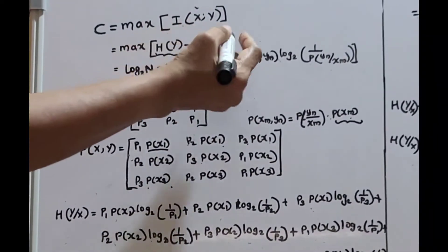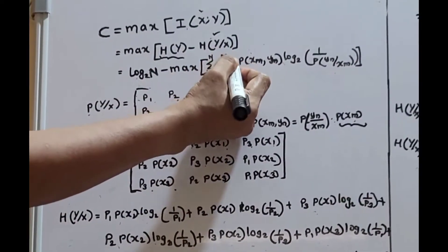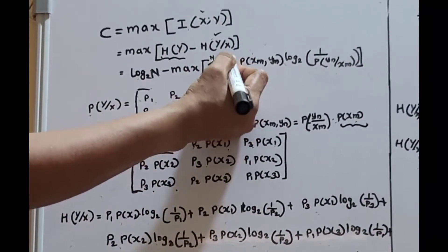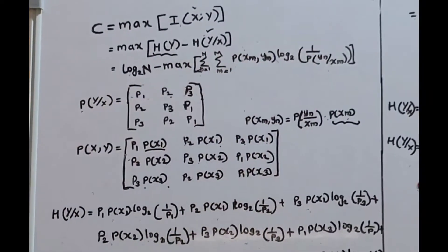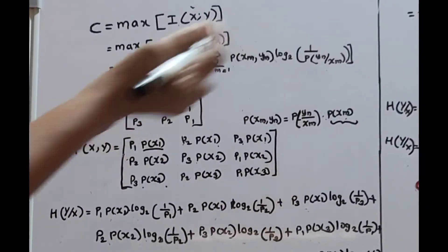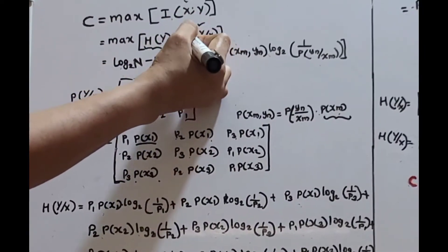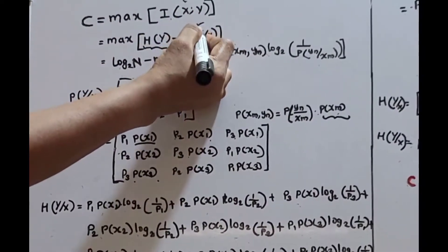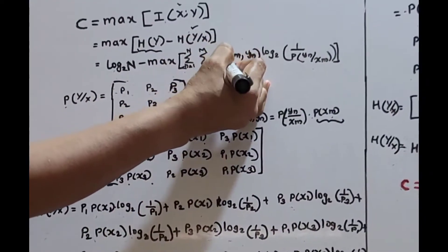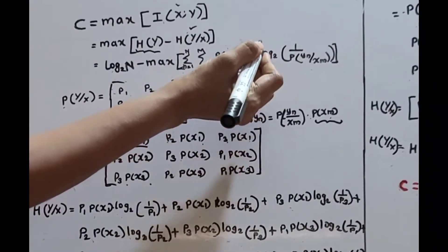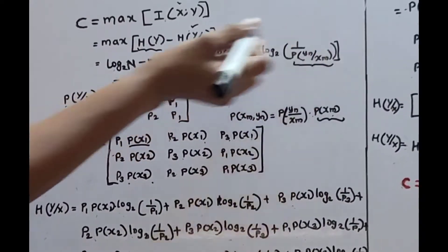The equation for conditional entropy is: maximum of summation n equals 1 to N, summation m equals 1 to M, of P(xm, yn) times log(1 / P(yn|xm)). That is, the conditional entropy is the combination of the joint probability matrix and the conditional probability matrix.